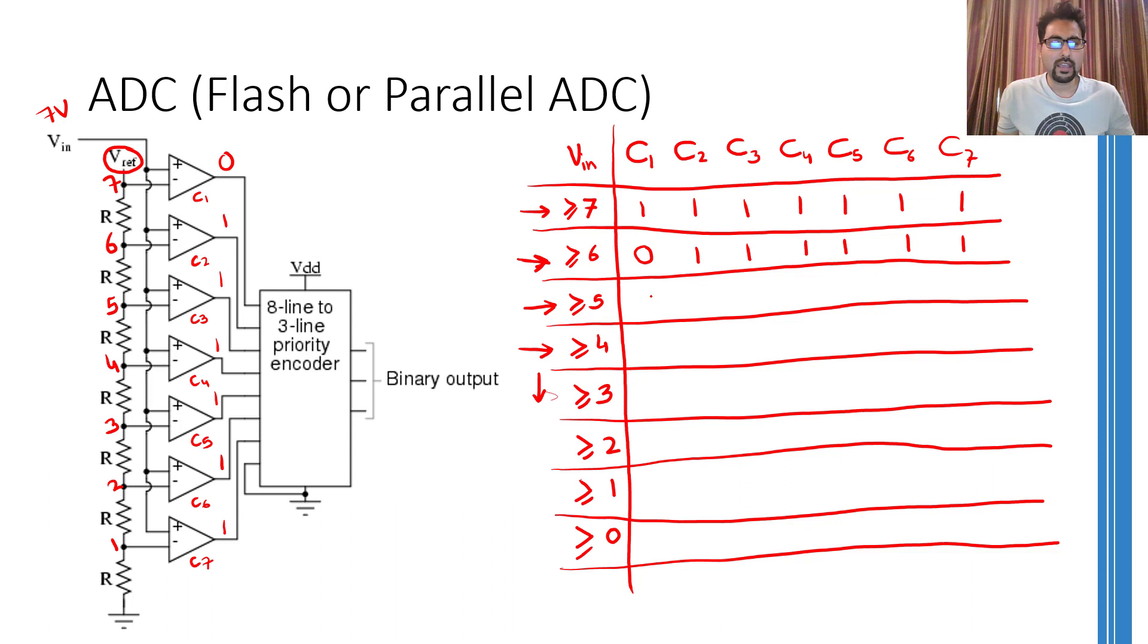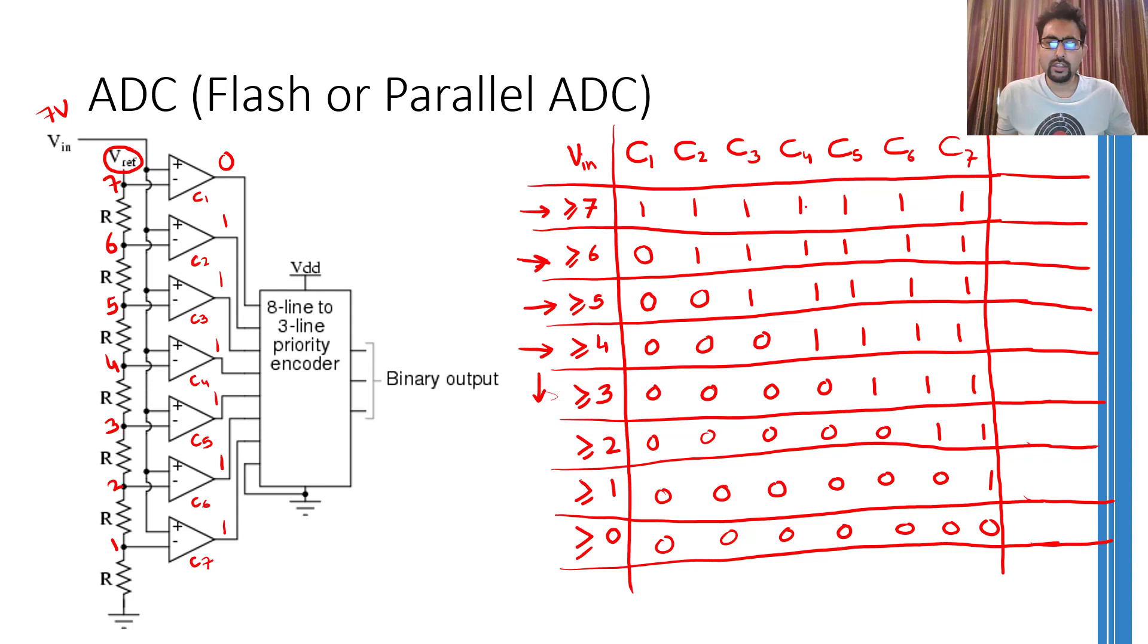Similarly, if the value of the input is somewhere between 5 and 6, the first and the second comparator are going to give you a 0, whereas all other comparators are going to give you 1s. And if I follow this procedure, I will come up with this complete table.